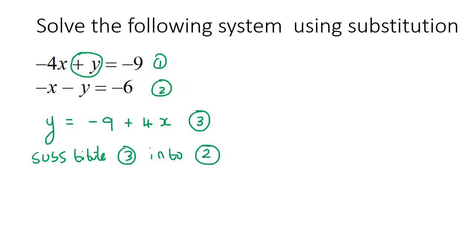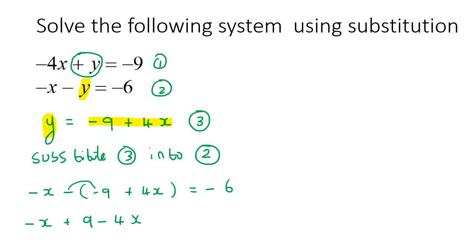Then I substitute equation three into the equation I have not used, which is equation number two. We take this Y, which is technically equal to this, and put it into the Y of equation two. So we get negative X take away (negative 9 plus 4X) equals negative 6, which gives negative X plus 9 take away 4X. Notice it became a plus because minus a negative is a positive — that's why brackets matter. That equals negative 6.